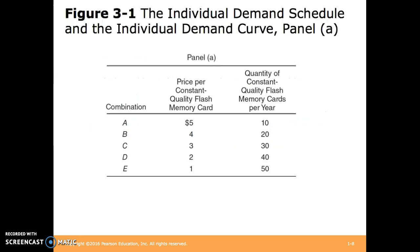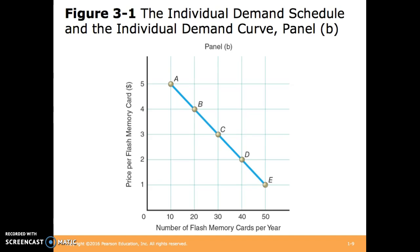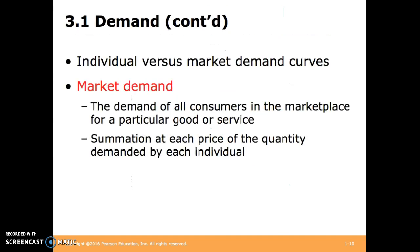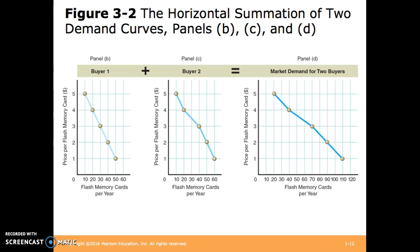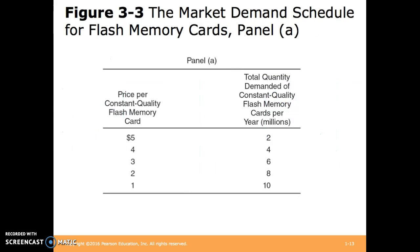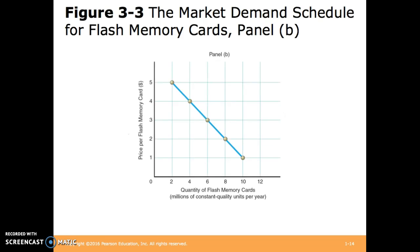Here's the demand schedule and the corresponding curve. We can look at individual or market demand curves. Market demand curves are the aggregation of all individual demand curves for any particular good or service. Here is a demand schedule showing two buyers' personal demands and their combined demands, along with their aggregation into the market demand curve.